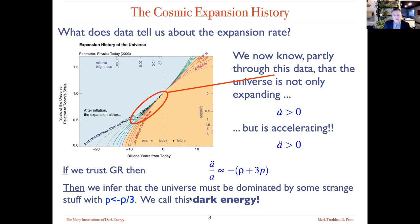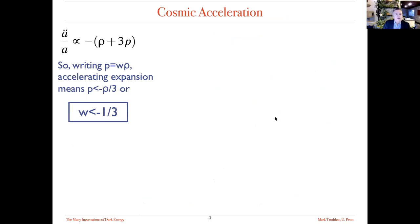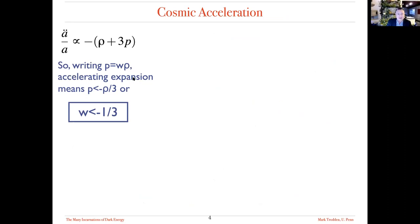It's common in cosmology to write whatever that stuff is as p = wρ, where w is called the equation of state parameter. Plugging that in, the criterion for acceleration becomes w < -1/3. This is just bookkeeping, but I'll use this equation of state parameter going forward.